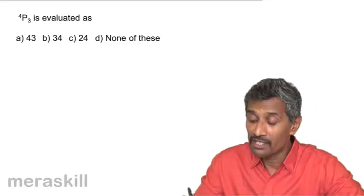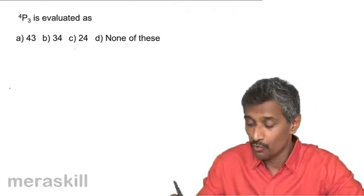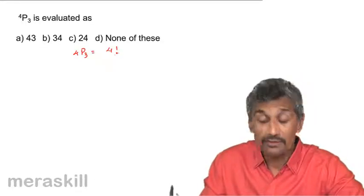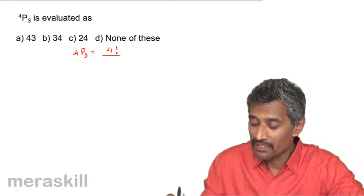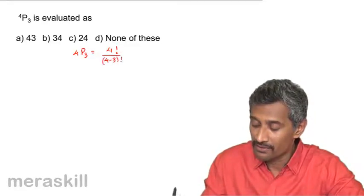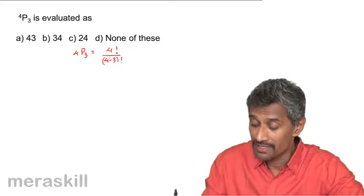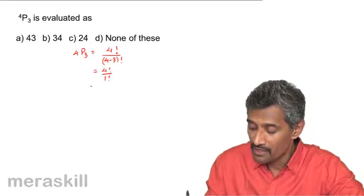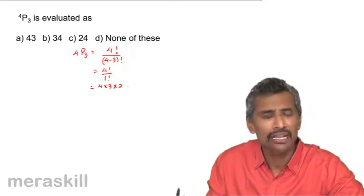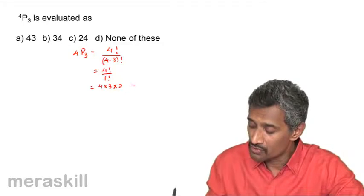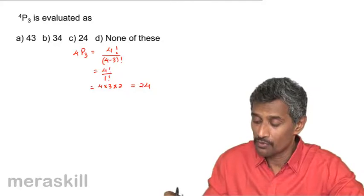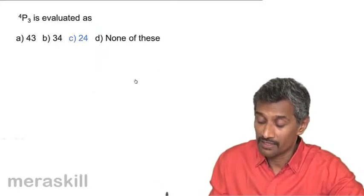Now, 4P3 is evaluated as what? 4P3 we know is four factorial upon N minus R factorial, that is four minus three factorial — which is four factorial upon one factorial. It should be remembered this is not the same as four factorial minus three factorial. One factorial is nothing but one, and four factorial is four into three into two, so we need not write the one anymore. This turns out to be 24. So 4P3 actually means 24.